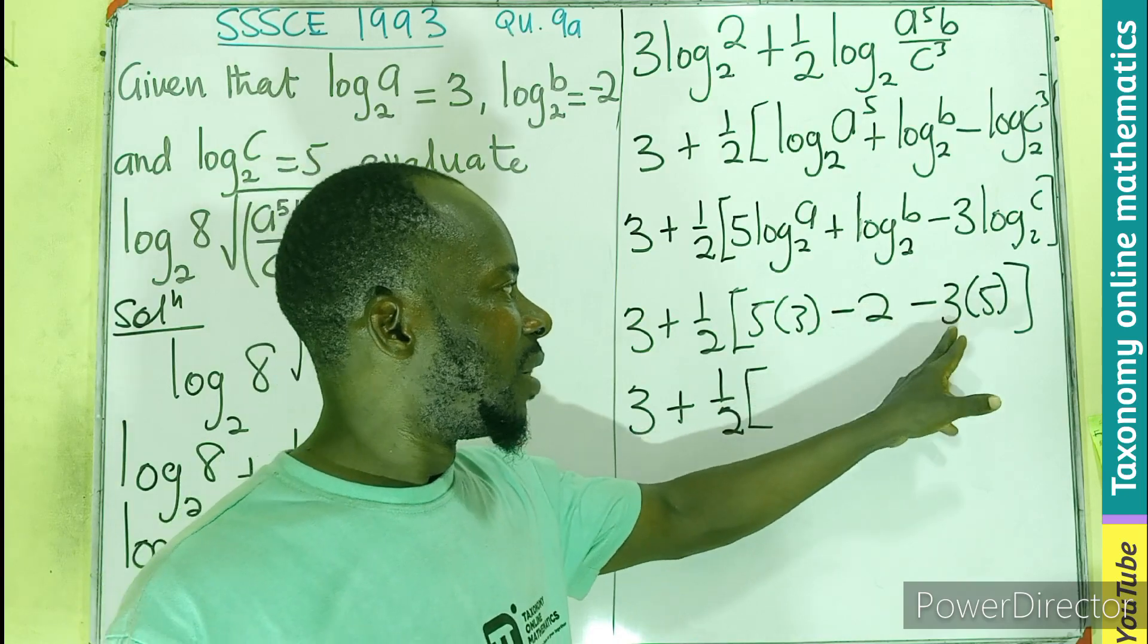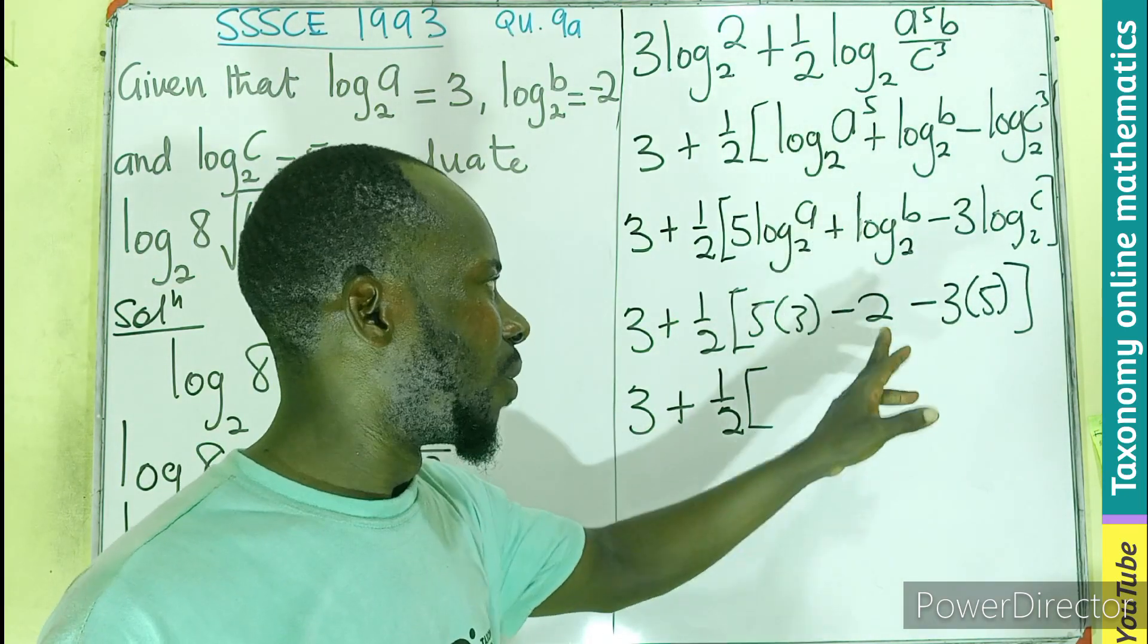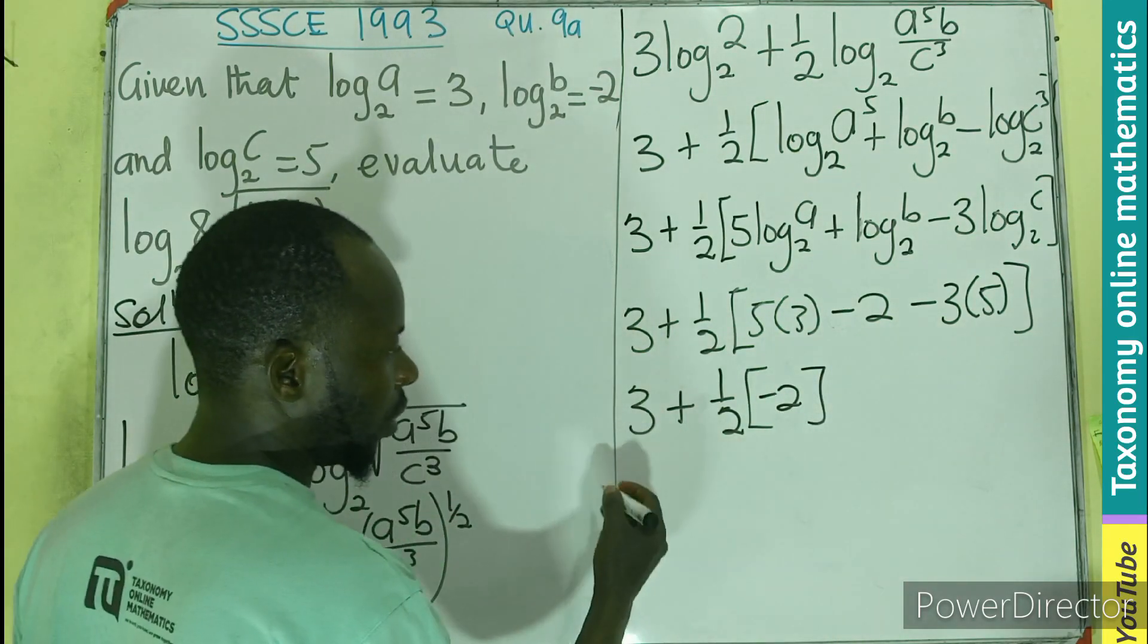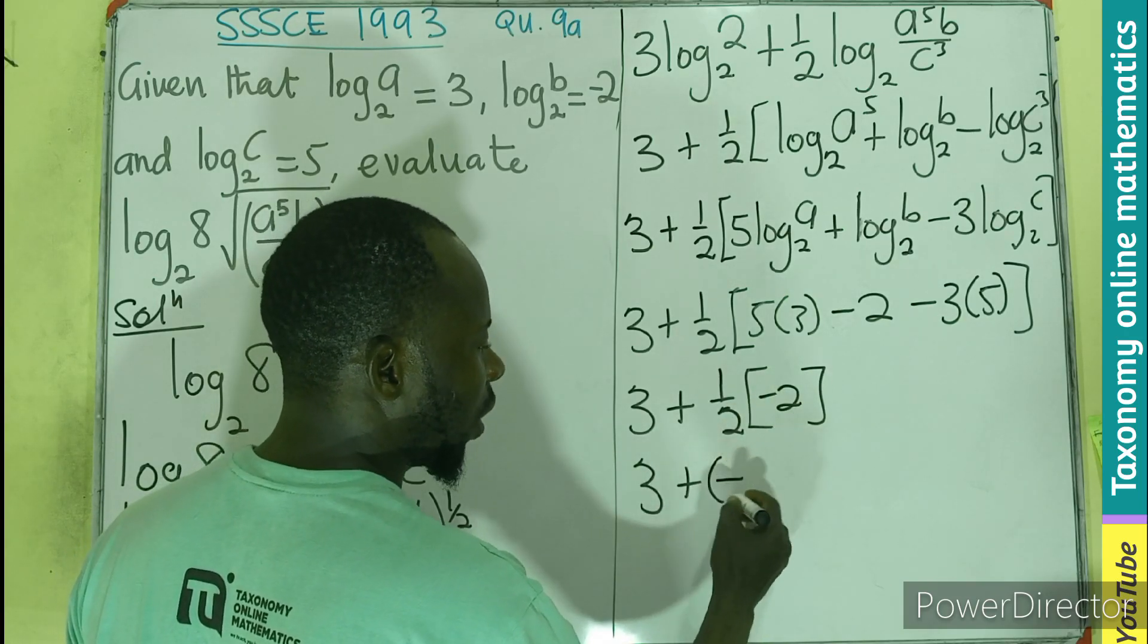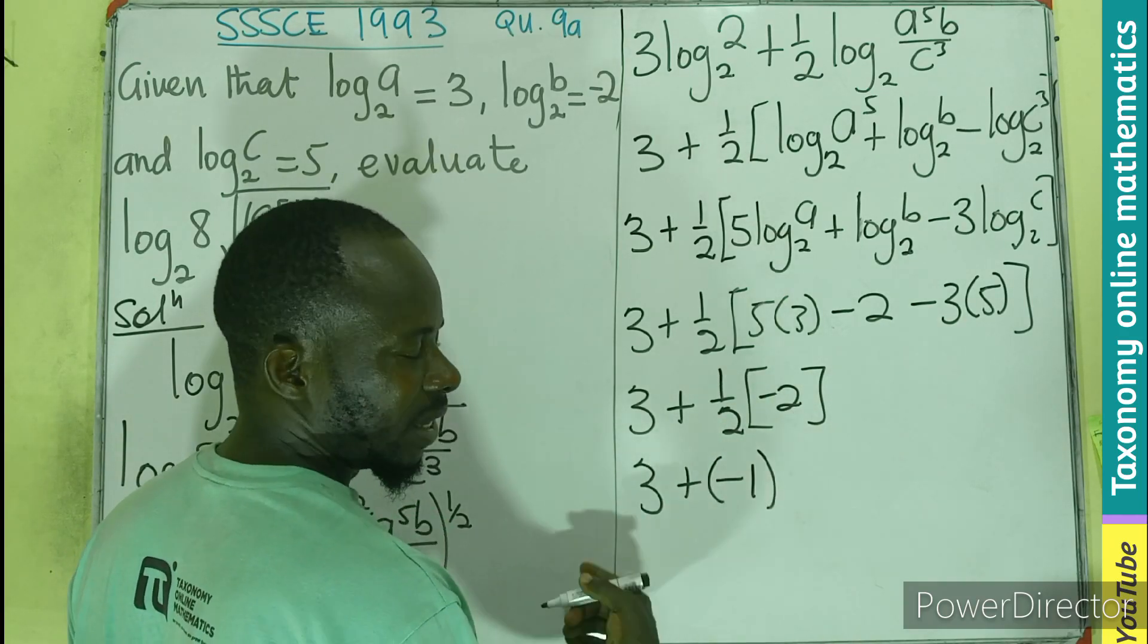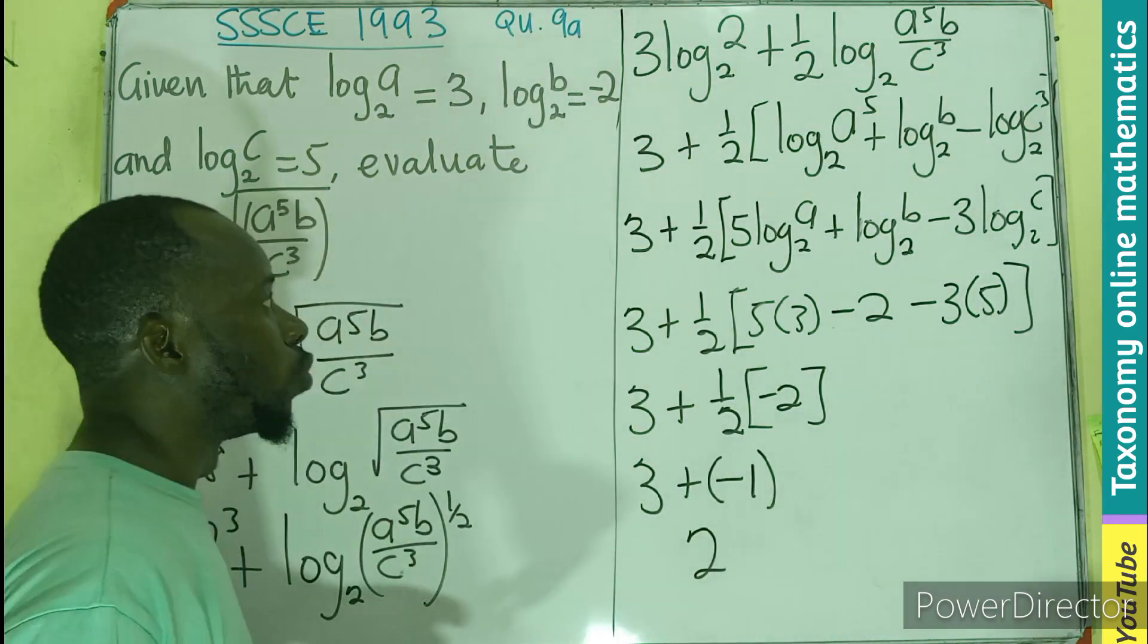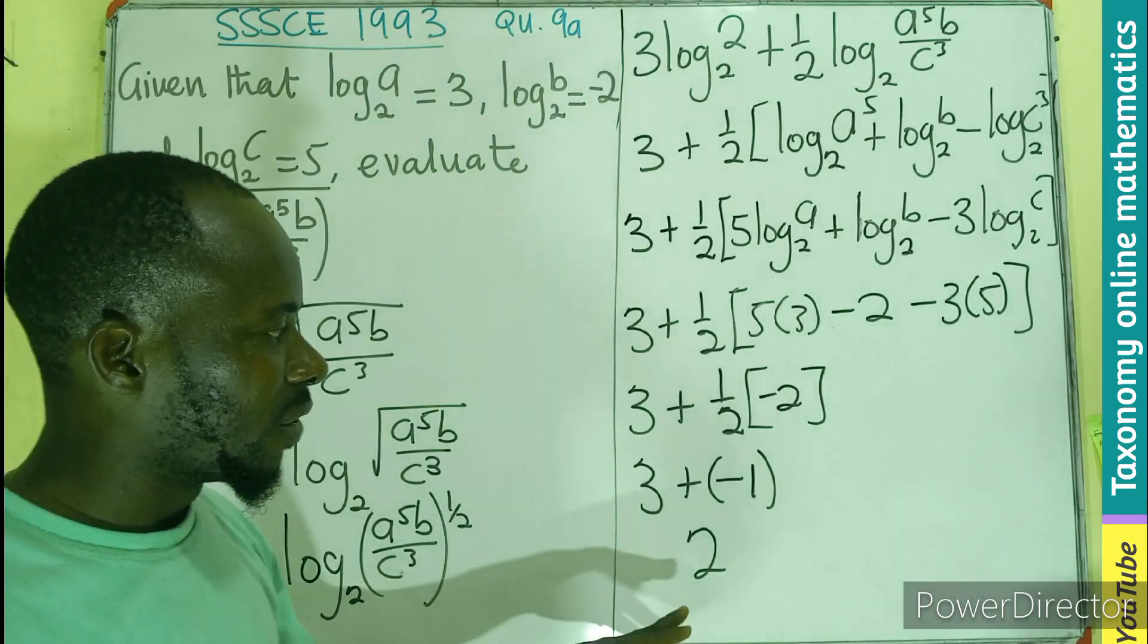This is going to be 15. 15 minus 15, that will be 0. So we left with only a negative 2. This becomes 3 plus half of negative 2. It will give you a negative 1. 3 plus negative 1 will give us 2. Meaning, the evaluation of this will give us 2.